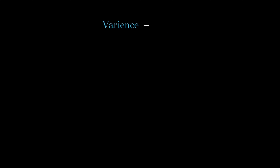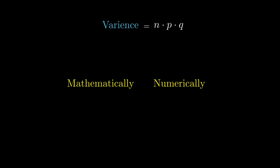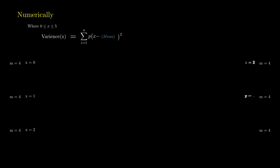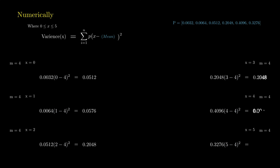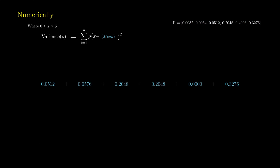Similarly for variance, we can prove in two ways that the variance of binomial distribution is n·p·q — one numerically and one with a pure mathematical proof. Numerically, we write variance as summation of probability times (x − n·p)², where n·p is the mean. For each outcome x from 0 to 5 we have the probability, x, (x − np), and (x − np)². Summing probability times (x − np)² gives us n·p·q.